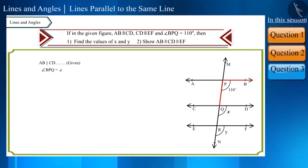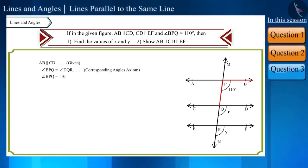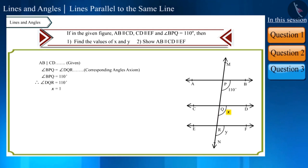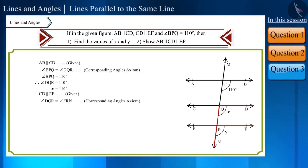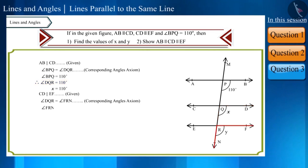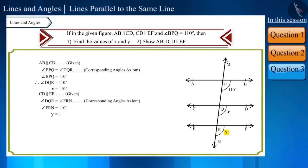We are given that line AB is parallel to line CD. Therefore, according to the corresponding angles axiom, angle BPQ and angle DQR will be equal. The measure of angle BPQ is 110 degrees, so angle DQR will also be 110 degrees — that is, the value of X is 110 degrees. Line CD is parallel to line EF, so by the corresponding angles axiom, angle DQR and angle FRN will be equal. Since angle DQR is 110 degrees, angle FRN is also 110 degrees, meaning Y equals 110 degrees.